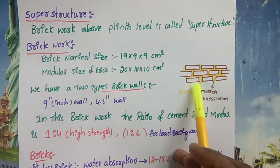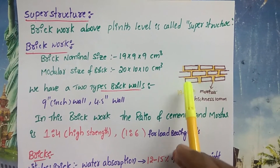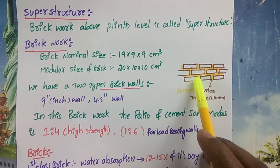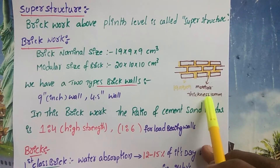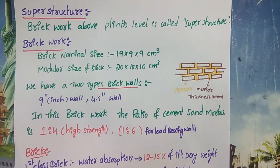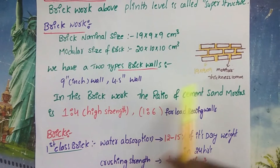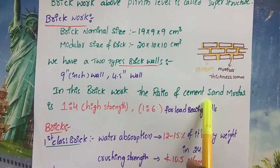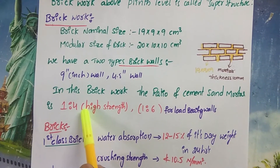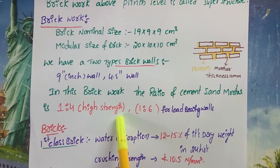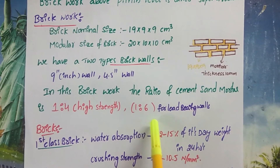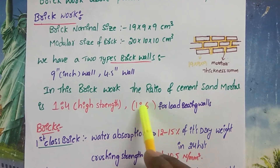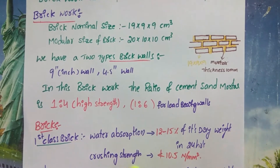This is the 19 x 9 x 9 cm nominal size brick. We have a bond with 10 mm mortar. The ratio of cement-sand mortar is 1:4 for high-strength, high-rise buildings or any buildings. For load-bearing walls and up to three-storey buildings, the ratio of cement-sand mortar is 1:6.